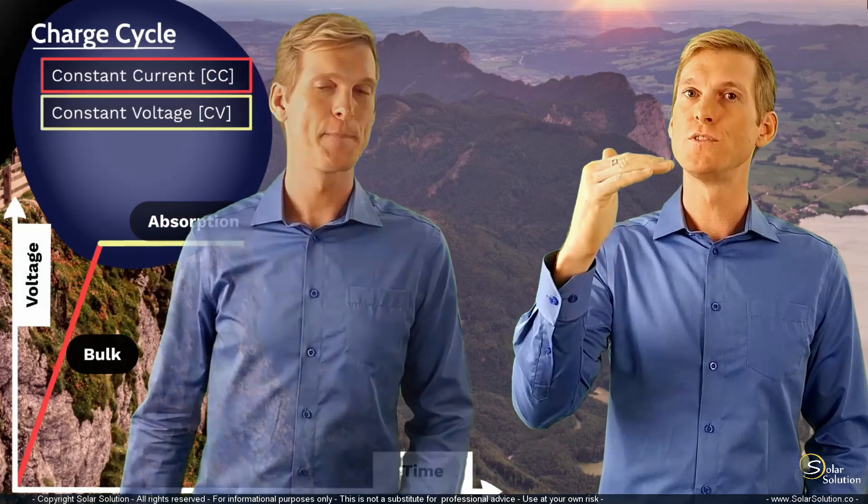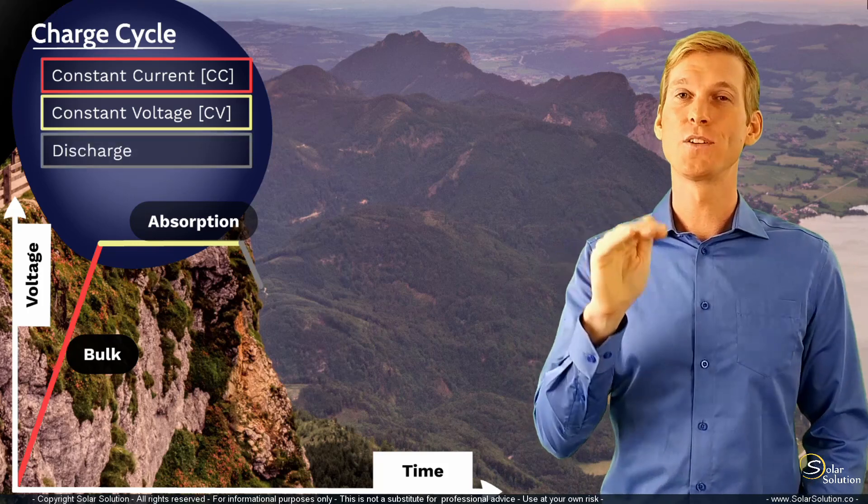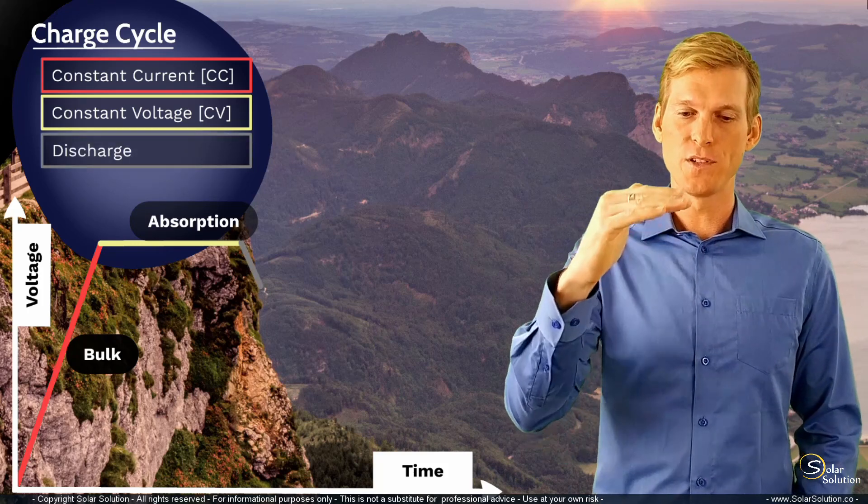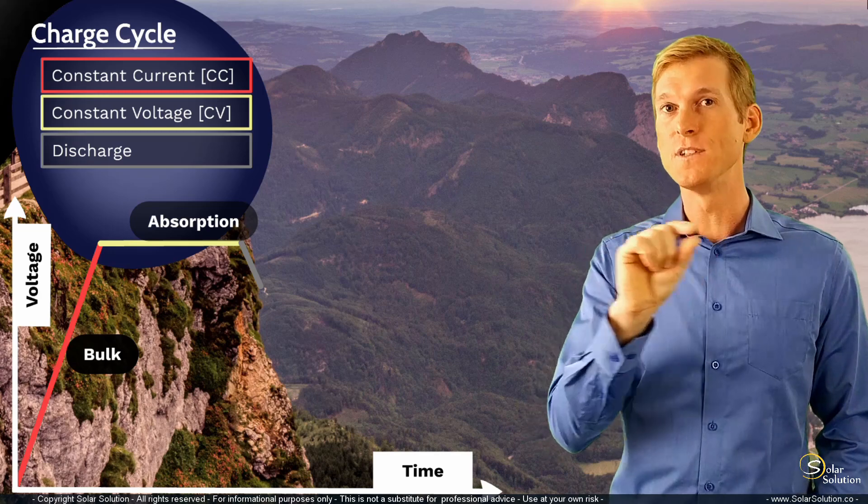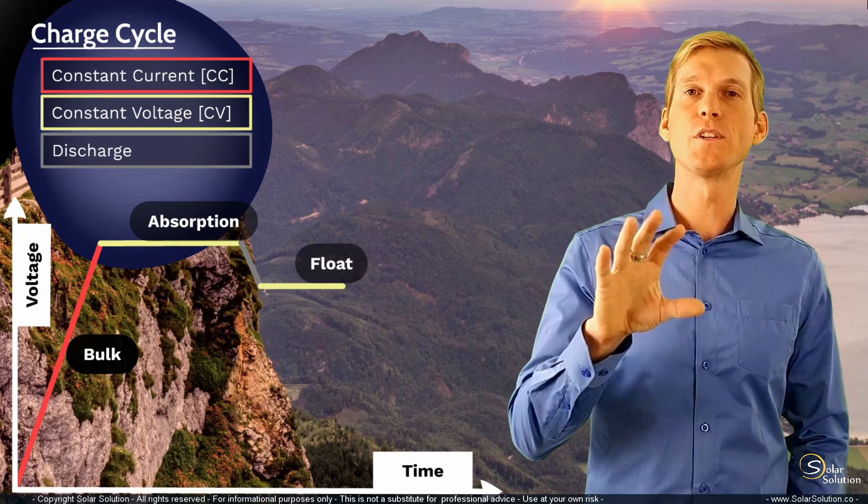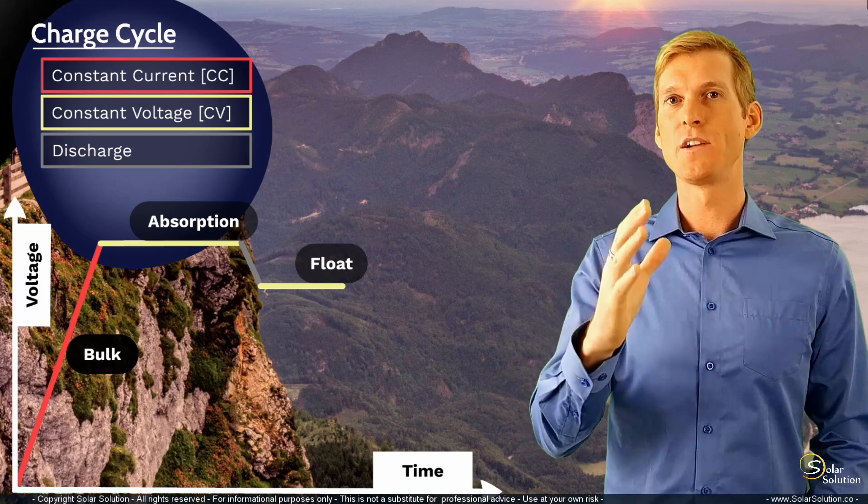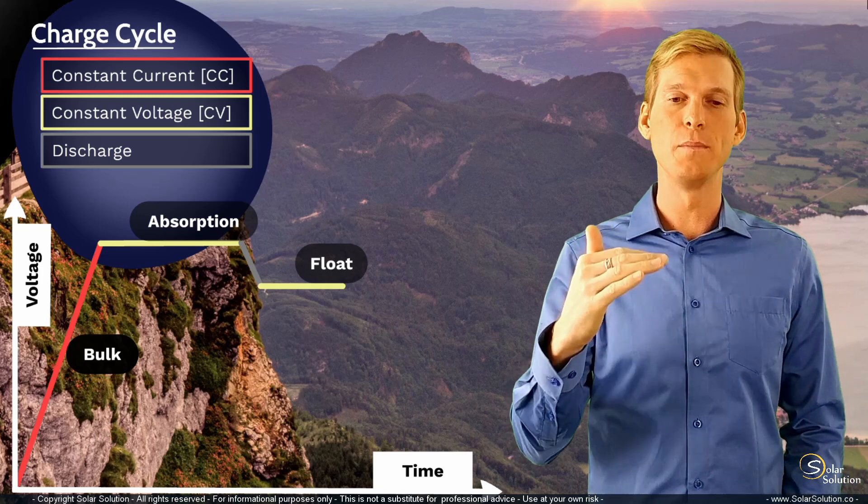And it will now allow the voltage to drop to a lower level, where we are still in the yellow section, so the constant voltage section, but it's just at the lower level, and we refer to this section as the float voltage. Now once you have reached the float stage of the charging cycle, you may assume that the battery is 100% charged, that it is as full as it can possibly be.